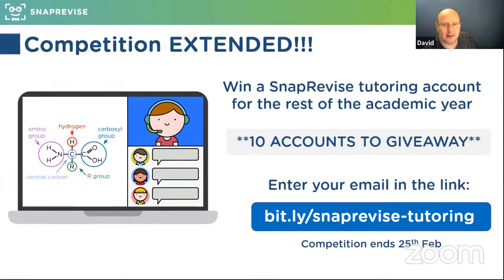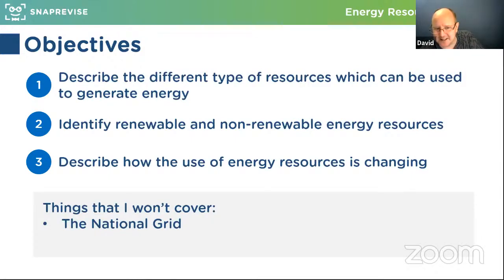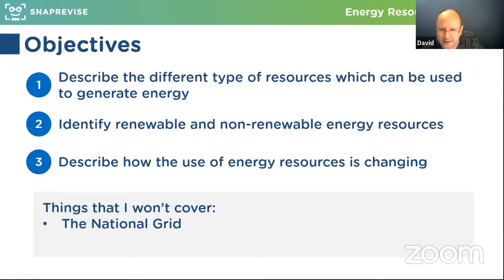Today we're going to be covering energy resources. The tutoring course will be cheaper than the A-level equivalent offering — I know that will be a lot less than around 70 or 80 pounds a year, but head over to the Snap Revised website to find out exactly.